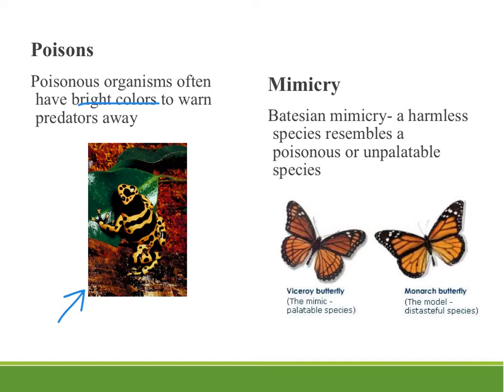In mimicry, one species resembles another. In Batesian mimicry, you have a harmless species that resembles a poisonous or unpalatable species. The viceroy butterfly, for example, evidently tastes better than the monarch butterfly that it greatly resembles, so by looking like a not-very-tasty insect it avoids being eaten. You also see this with some flies that resemble stinging insects — they resemble a wasp or a bee. The fly does not sting, but it looks enough like the stinging insect that it may allow that species to survive.